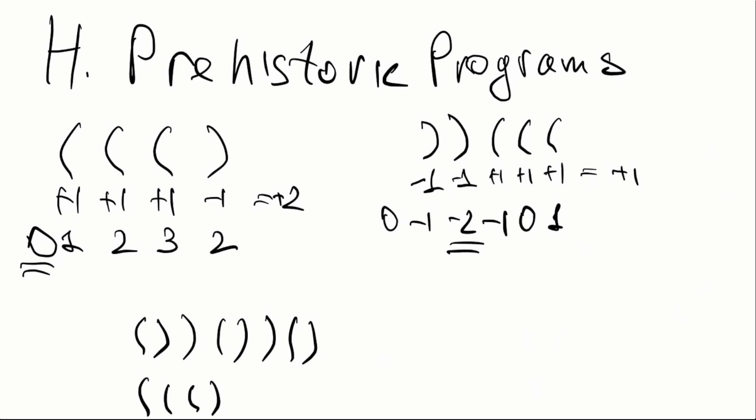This can be also formulated in terms of balance. Like, let's say that opening brackets is plus one and closing brackets is minus one. So to make sequence properly balanced, the total balance should be zero, and no brackets should have negative balance.